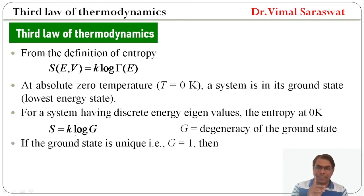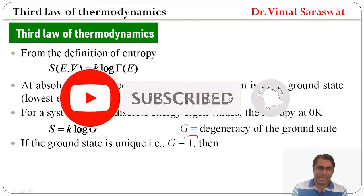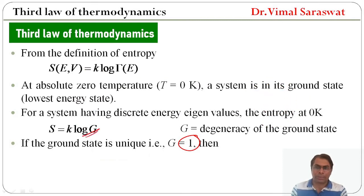And if the ground state is unique, that is, its degeneracy is 1, so if G equals 1, then log 1 equals 0, so the entropy will be 0.